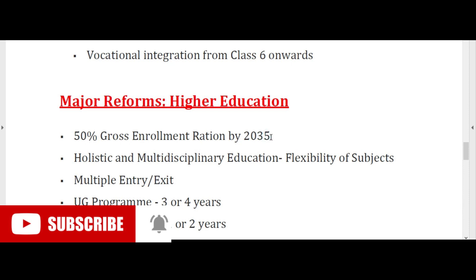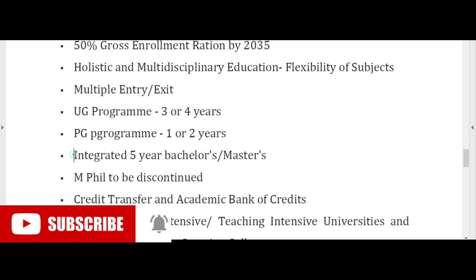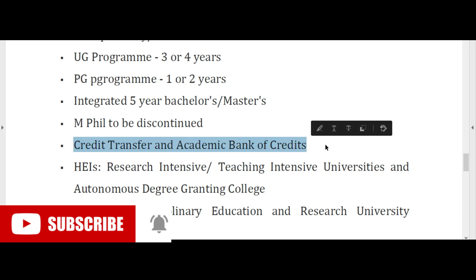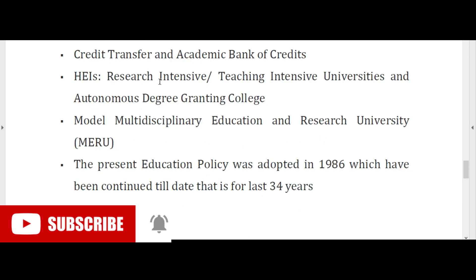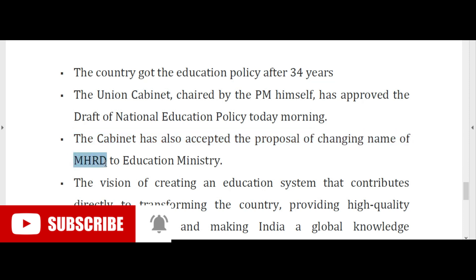Holistic and multidisciplinary education with flexibility of subjects and multiple entry or exit options. UG program of 3–4 years, PG program of 1–2 years, and an integrated 5-year bachelor's or master's degree. MPhil to be discontinued. Credit transfer and Academic Bank of Credits introduced. Higher educational institutions categorized as research-intensive, teaching-intensive universities, and autonomous degree-granting colleges, along with a Model Multidisciplinary Education and Research University (MERU).